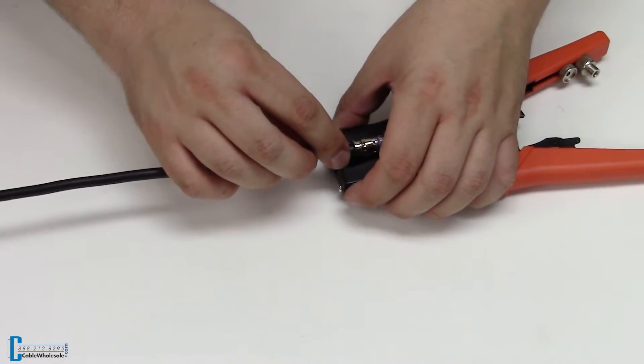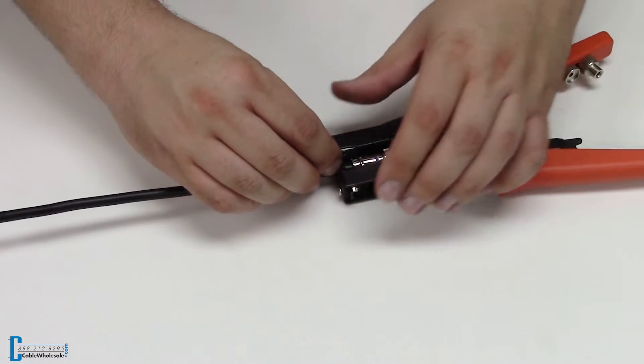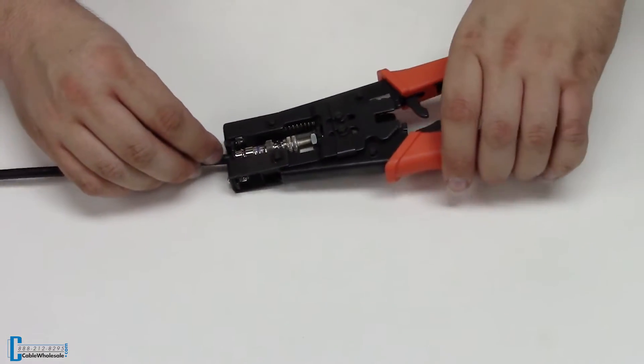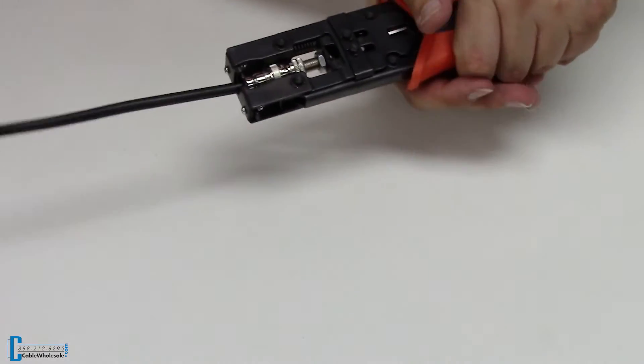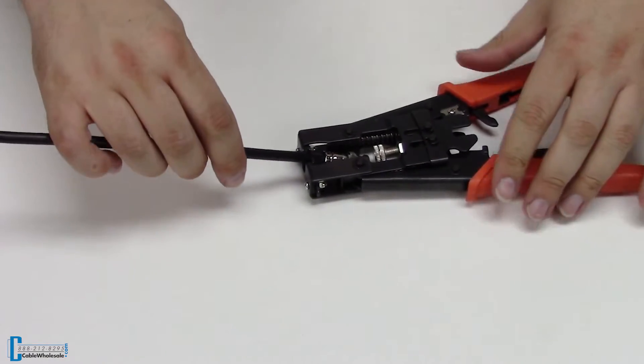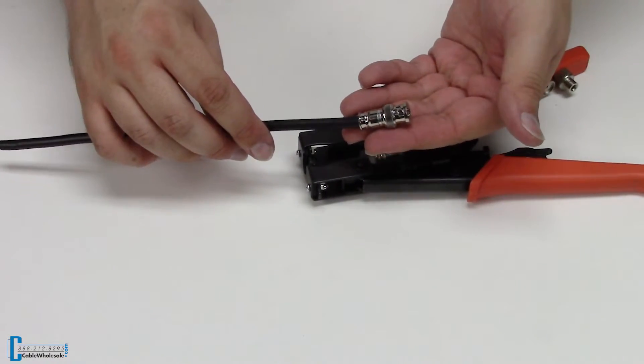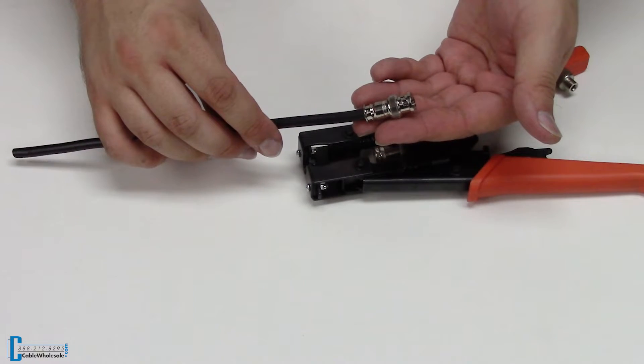Open up the wings. Just lay it right in here. Close on up and give the handles a squeeze. And you have your very own BNC coaxial compression cable.